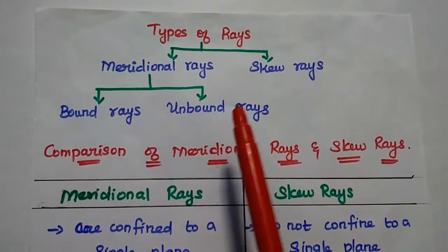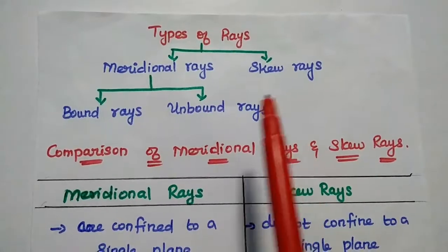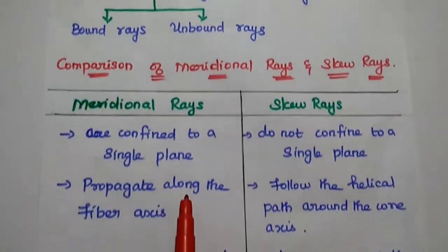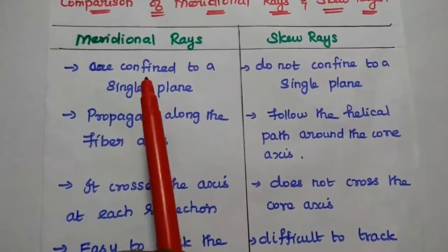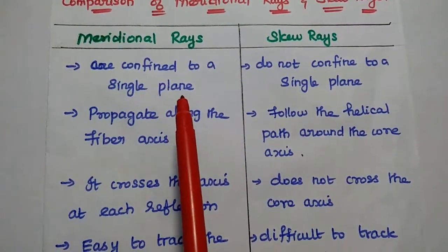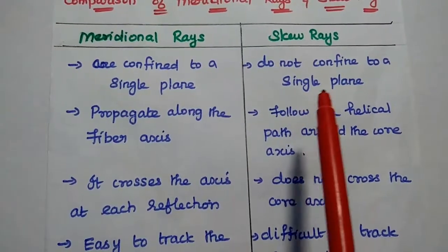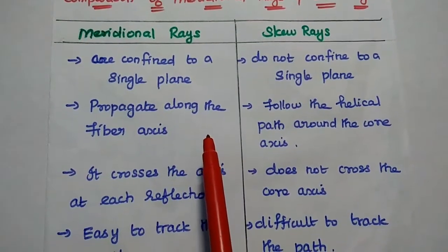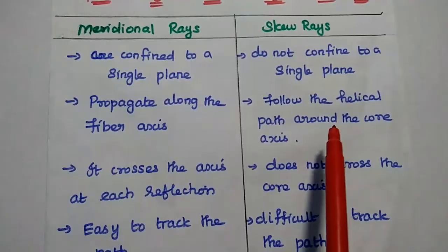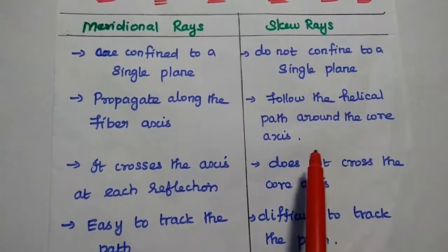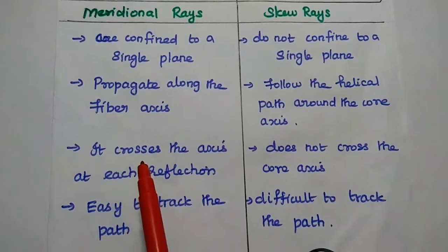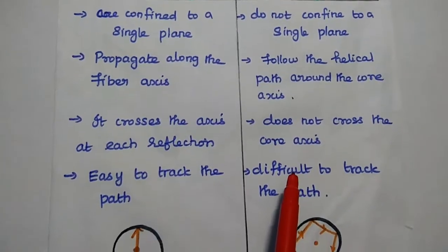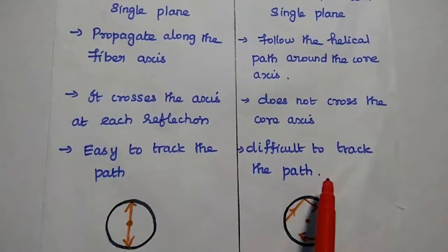Finally, the overview of the types of rays: meridional rays and skew rays. Meridional rays are further classified into bound rays and unbound rays. Meridional rays are confined to a single plane which contains the core axis, whereas skew rays do not confine to a single plane. Meridional rays propagate along the fiber axis, but skew rays follow a helical path around the core axis. Meridional rays cross the axis at each reflection, while skew rays do not cross the core axis. The path of meridional rays is easy to track, while skew rays are difficult to track.